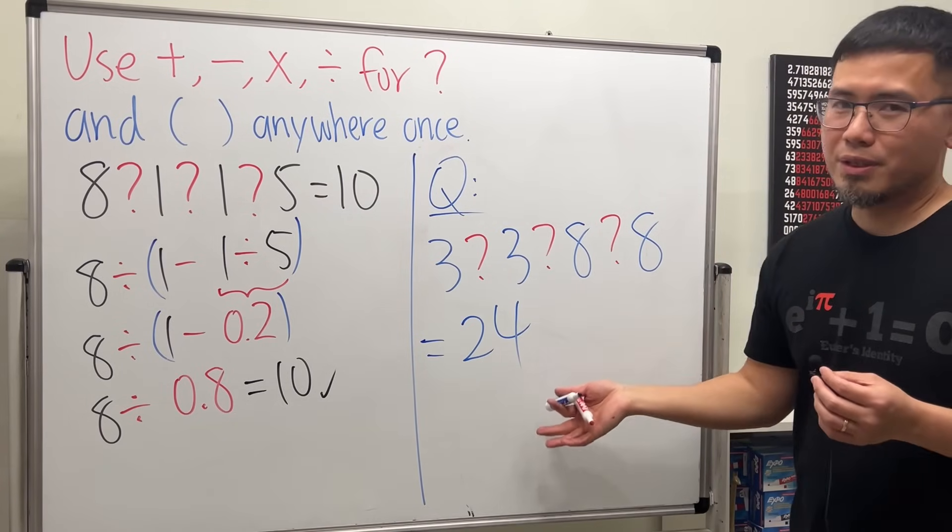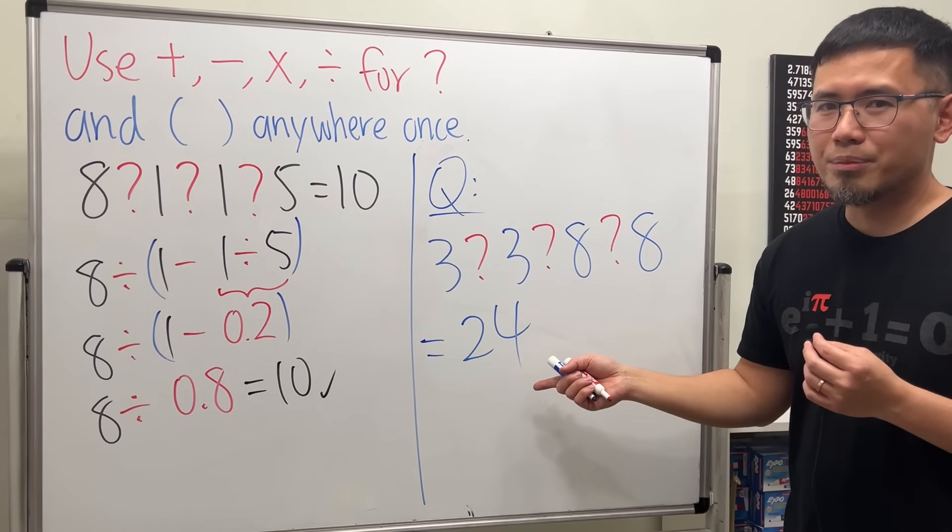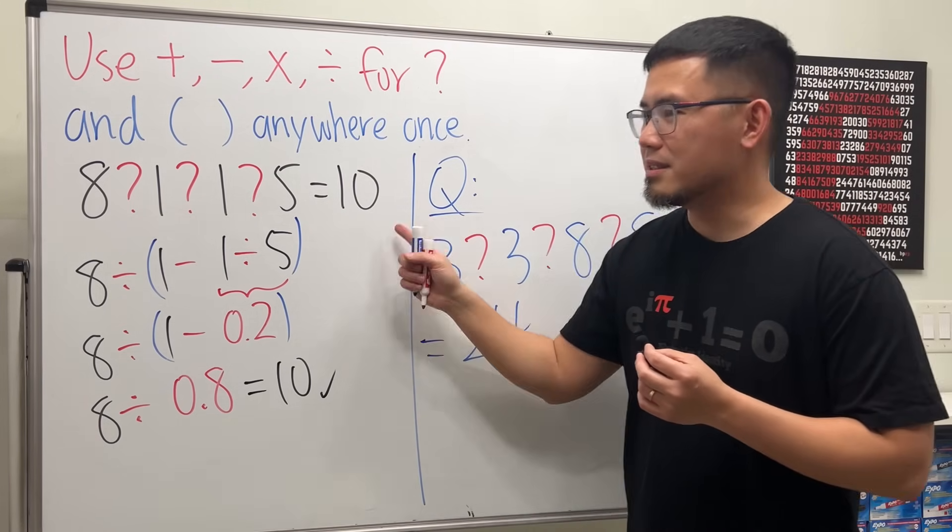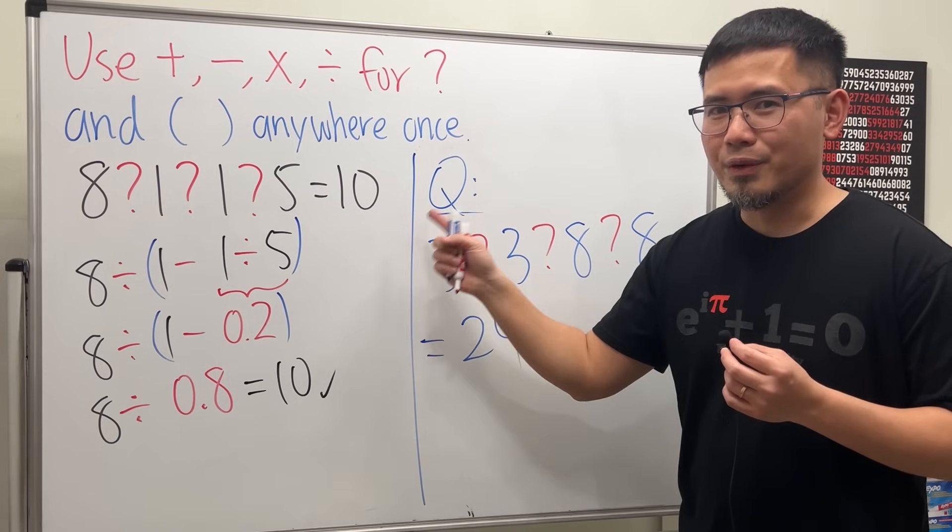I actually prefer 24 much better because that's Kobe Bryant's number. But in fact, 10 is also nice because that is his number for the Olympic Games.